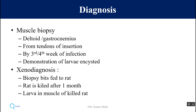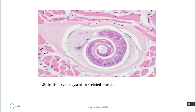For diagnosis, biopsy of the muscles is taken — mainly deltoid and gastrocnemius are easy to access. The tendon of insertion is the site where larvae localize more commonly. From there we take muscle biopsy and demonstrate that the larva is encysted. A second method, now considered obsolete, involved feeding the biopsy to a rat and killing the rat after one month to see the larva in the rat's muscles. Here is an example of a muscle biopsy showing encysted larva in the muscle.